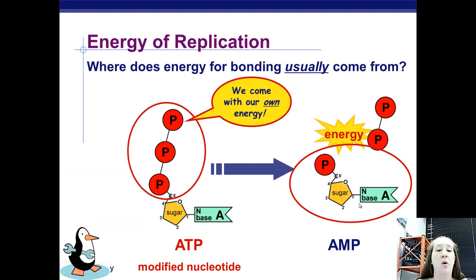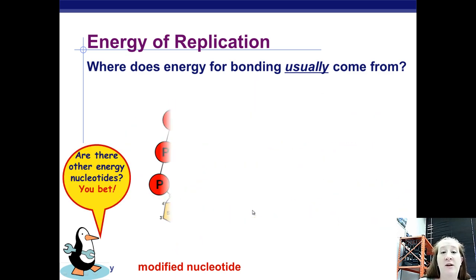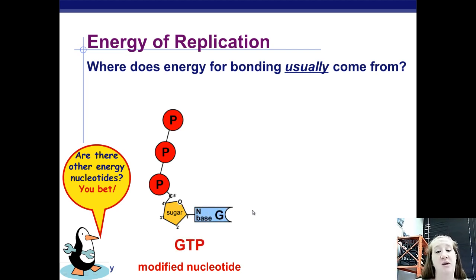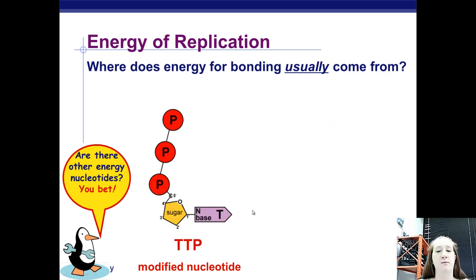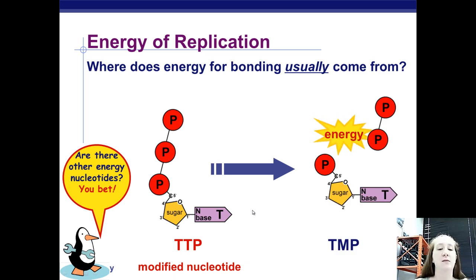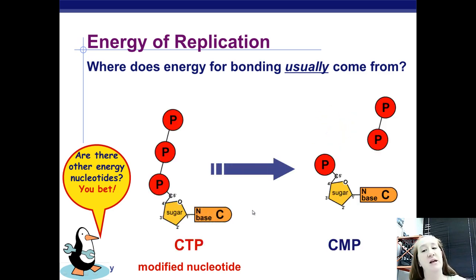So, nucleotides come with their own energy already attached to them. Is ATP the only high-energy nucleotide? Nope. There's also GTP, which can be converted to GMP. And then there's TTP, which can be converted to TMP. And then there's CTP, that can be converted to CMP. Each of these, as you take off the two phosphates, you're going to get a release of energy.